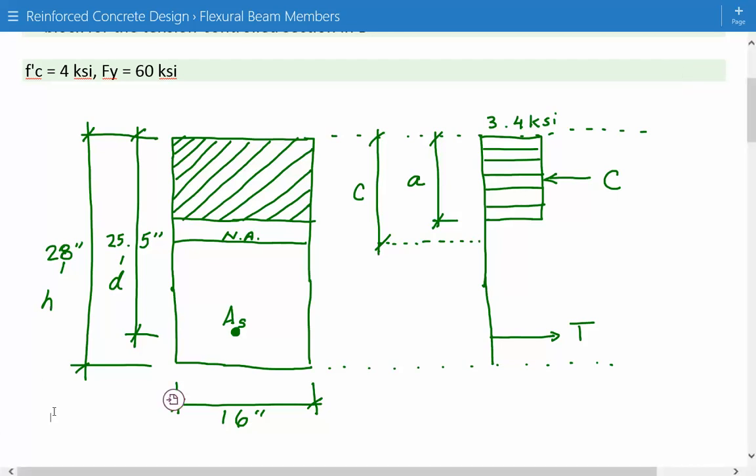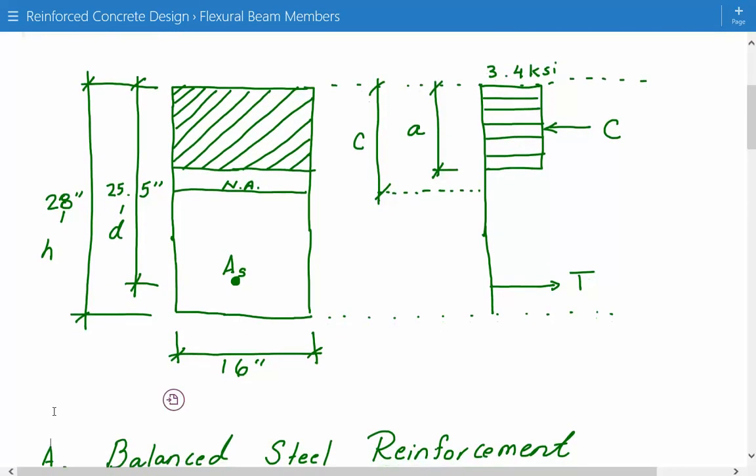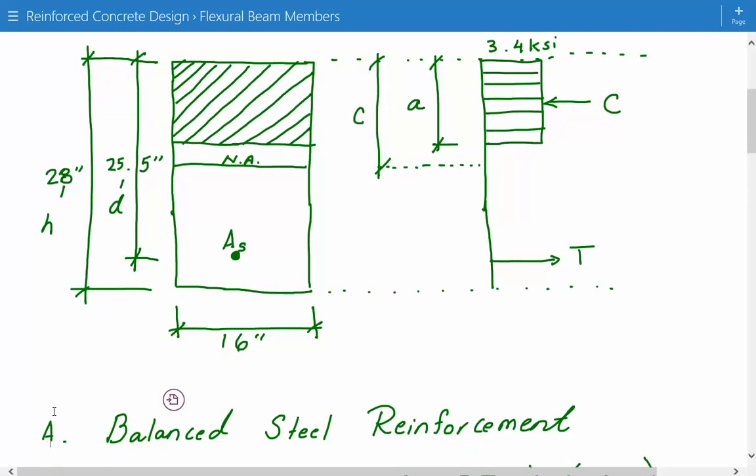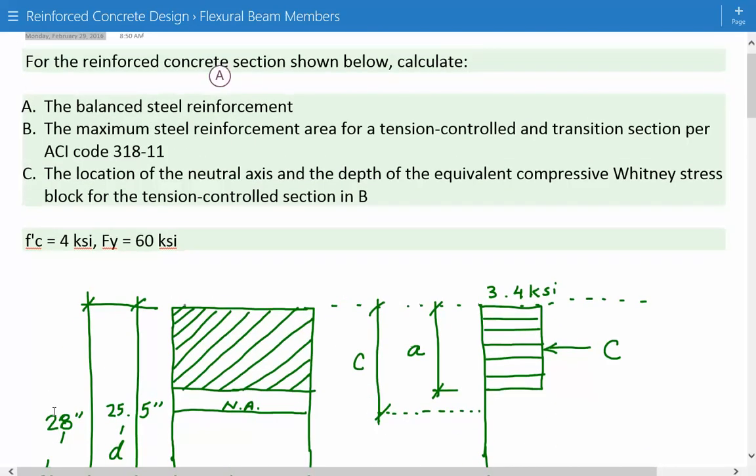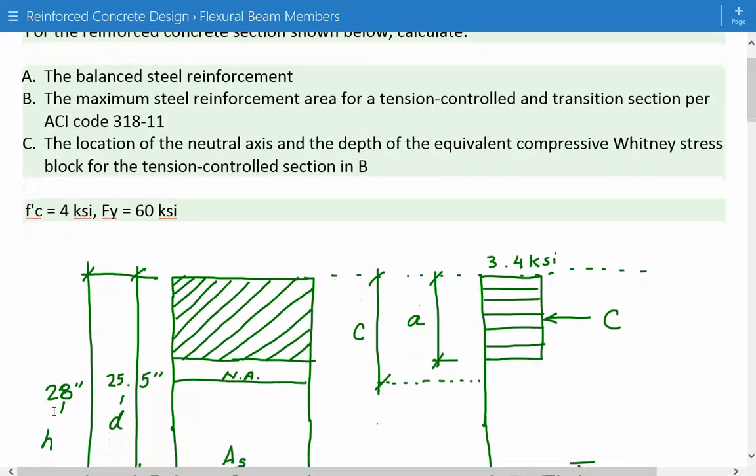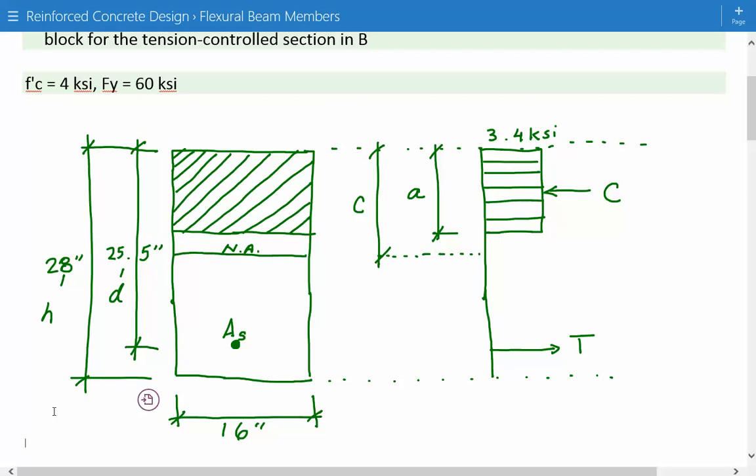In this video we'll just cover part A of the problem and then do the remaining parts in the next videos. Part A is asking us to calculate the area of steel required for a balanced condition for balanced steel reinforcement. Balanced condition occurs when the steel yields at the same time as the concrete fails. The balanced strain is when the steel at first yield reaches a strain corresponding to its yield strength, just as the maximum strain in the concrete at the extreme compression fiber reaches 0.003.